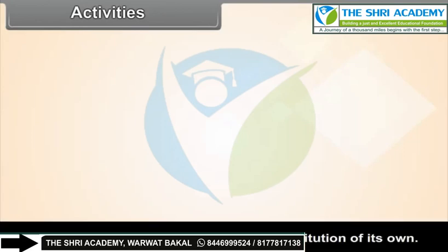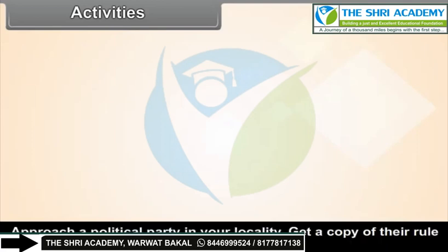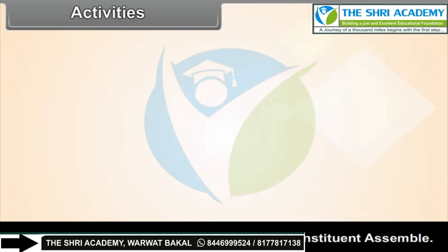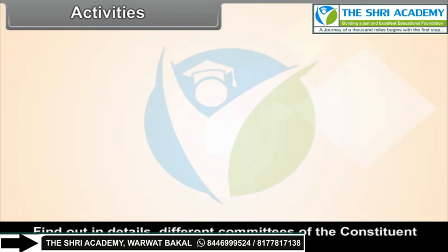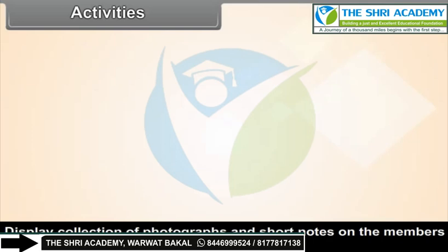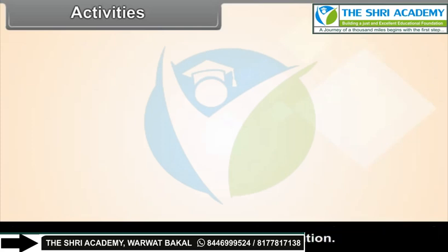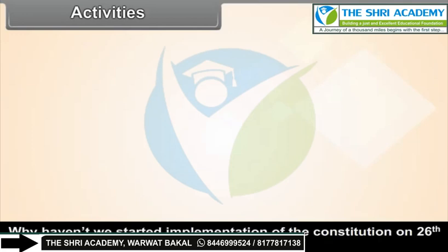Activities: Find out whether your school has a constitution of its own. Approach a political party in your locality and get a copy of their rule book and read it. Find out more about the members of the Constituent Assembly and its different committees. Display a collection of photographs and short notes on Constituent Assembly members. Find out how many women members the Constituent Assembly had. Get a copy of the Indian Constitution and prepare a constitution of your class. Why wasn't the Constitution implemented on 26th November when it was adopted?